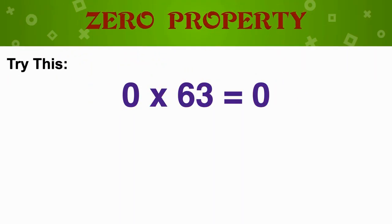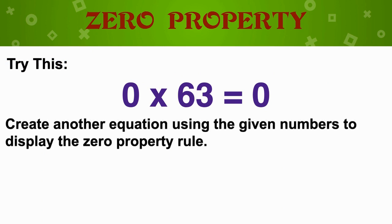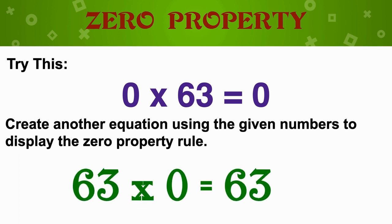If 0 times 63 is 0, can you think of another equation using the given numbers to display the zero property rule? If you said 63 times 0 is equal to 0, you are correct. Boys and girls, you're doing an awesome job!